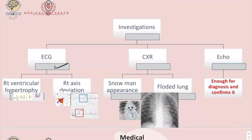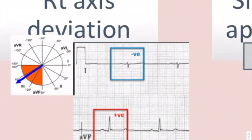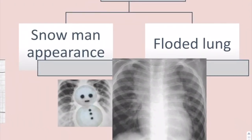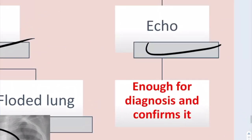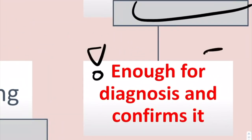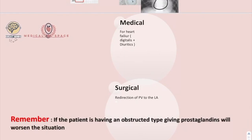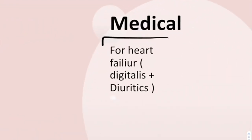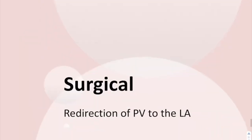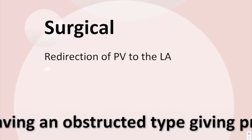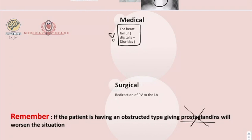Investigations include ECG, chest X-ray, and echo. ECG shows right axis deviation and right ventricular hypertrophy. Chest X-ray shows a flooded lung and a snowman appearance, also called the figure-of-eight sign. Echo is very important in TAPVR as it can diagnose and confirm the condition. Medical treatment addresses heart failure with diuretics. Surgical treatment is redirection of pulmonary vessels to the left atrium. Note: in the obstructed type (infracardiac), prostaglandins will worsen the situation by keeping the ductus arteriosus open, increasing pulmonary blood flow and worsening pulmonary hypertension.